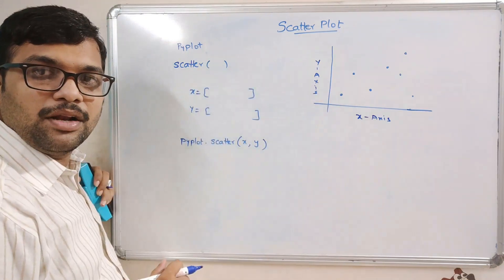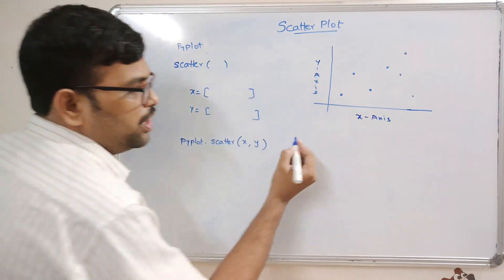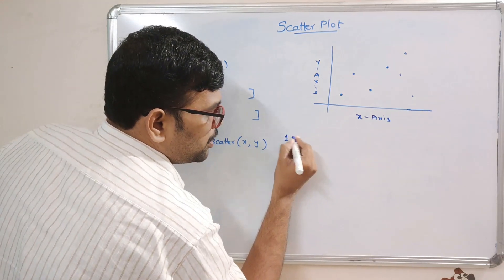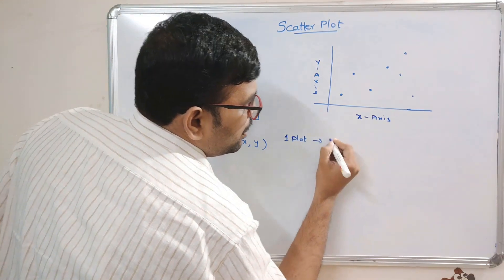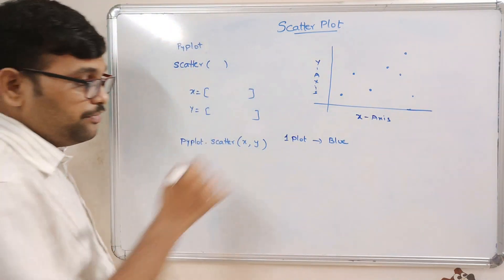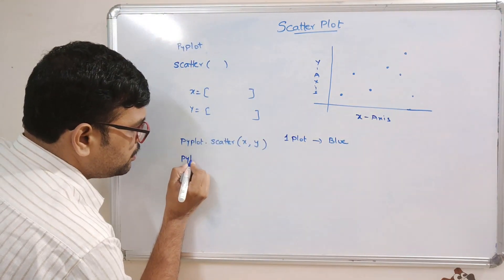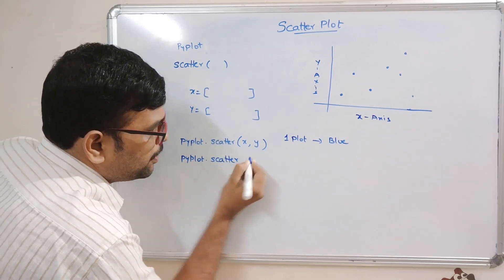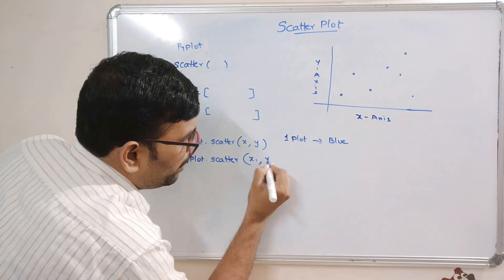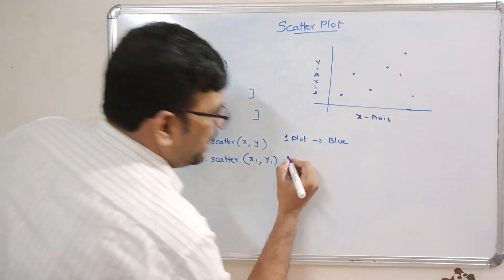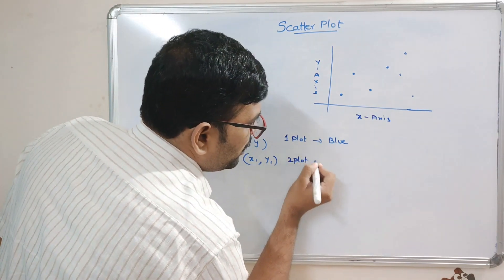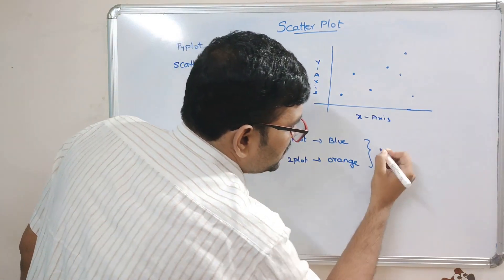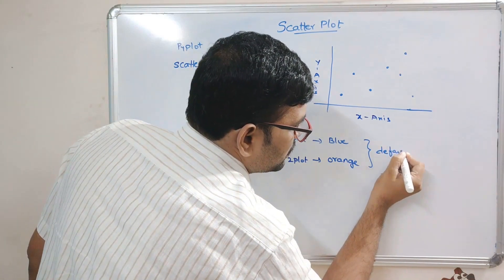If you want to give a color for the plot and you are representing only one plot, the color will be blue by default. If you plot two different plots - for example, pyplot.scatter with x1, y1 - then the second plot will be of the color orange by default.